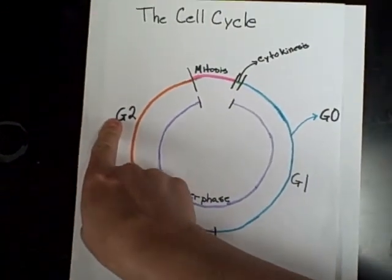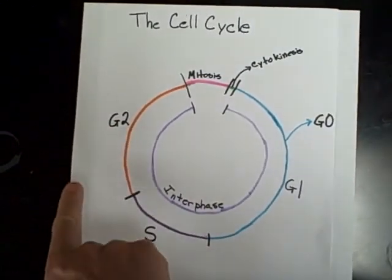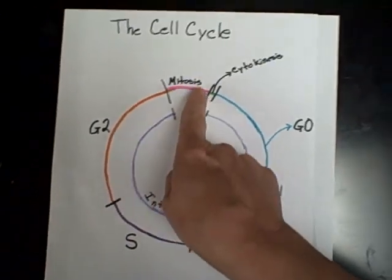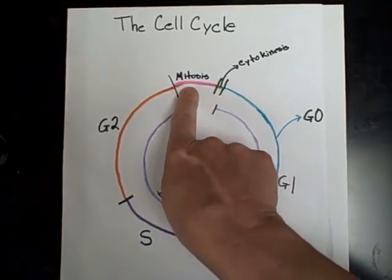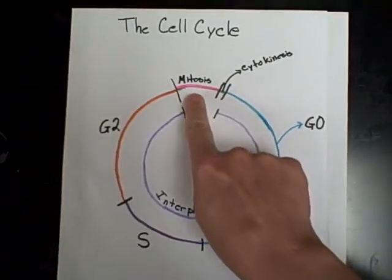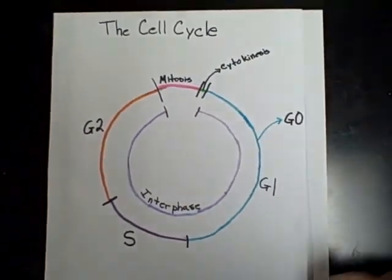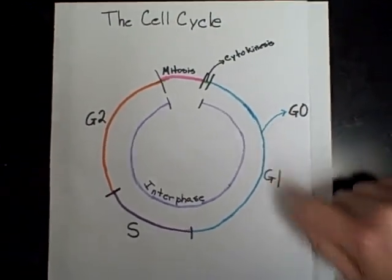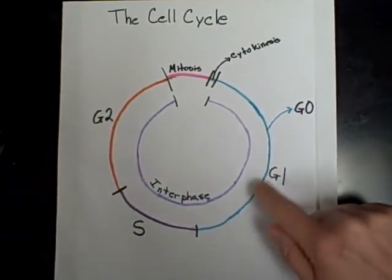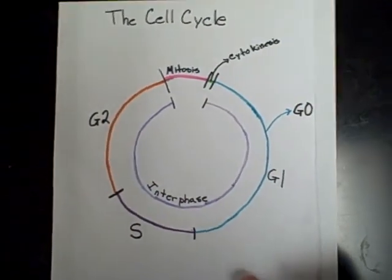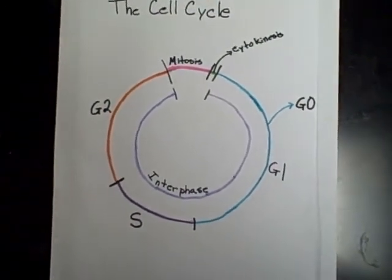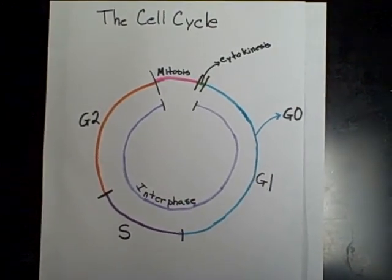After that, it enters the gap two phase where more cell organelles and more proteins are made. And at that point, it will enter mitosis for nuclear division and then cytokinesis. When there is a problem with your DNA, this cell cycle is disrupted and you can get uncontrolled cell growth, which is cancer.